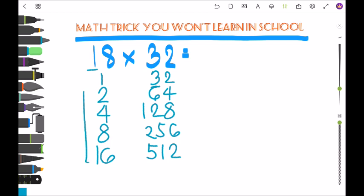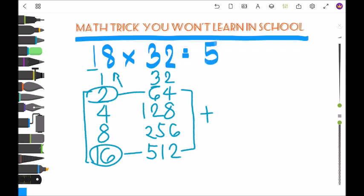From this row, 18. So 16 and 2 for a total of 18. What's the opposite number? 64 and 512. We add these numbers, so our answer is 576.